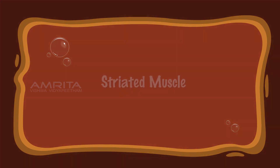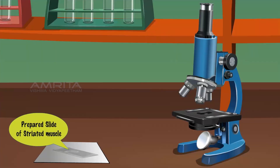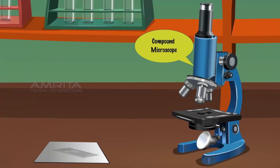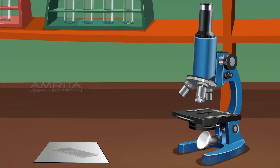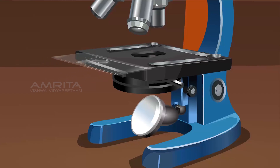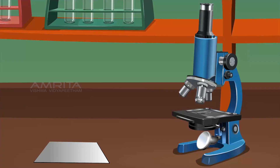Striated muscle. Materials required: prepared slide of striated muscle tissue and a compound microscope. Procedure: Place the prepared slide of striated muscle tissue on the stage of the compound microscope. Observe the features of the striated muscle tissues through the lens of the compound microscope.